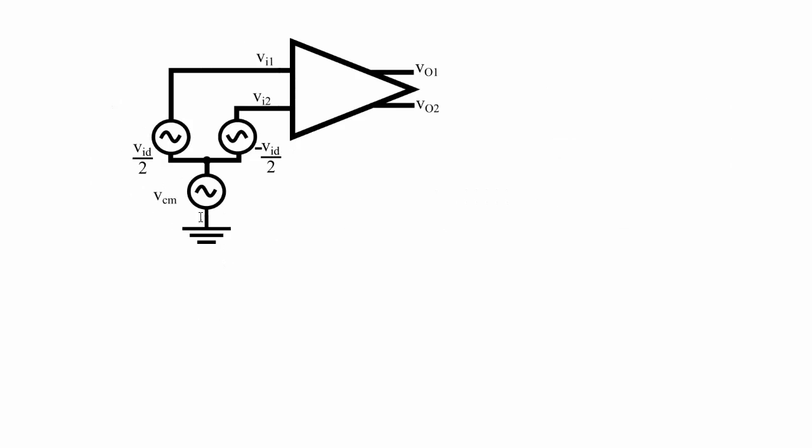Okay, this VCM is the common mode input, or this is the voltage that's common to the two inputs. And then VID is the differential input that's applied to VN1 and VN2.